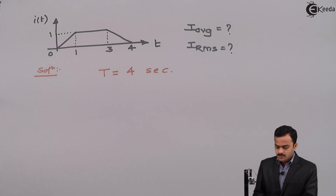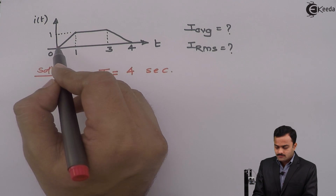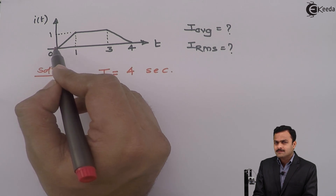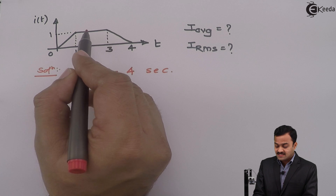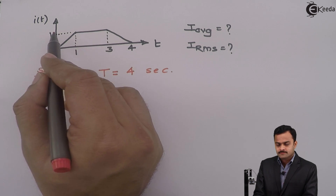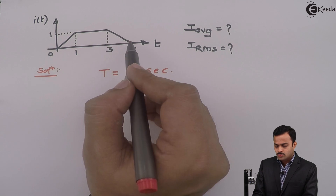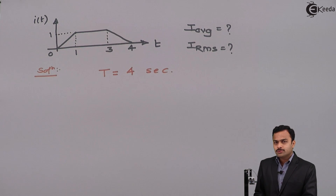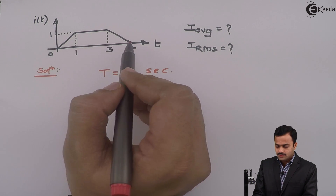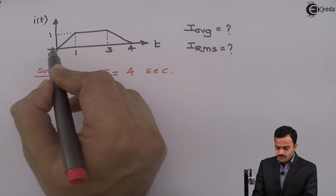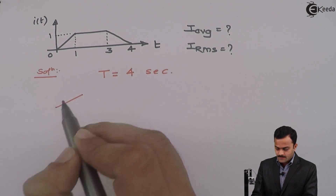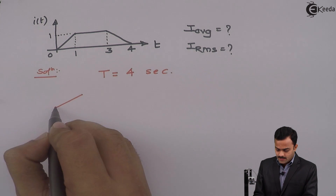From 0 to 1 it is a straight line passing from the origin with some slope. From 1 to 3 it is a straight line with slope 0 and a constant value of 1. From 3 to 4 it is a decreasing slope. So we need to find out equations for the intervals 0 to 1, 1 to 3, and 3 to 4.